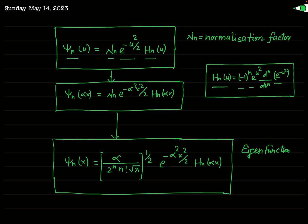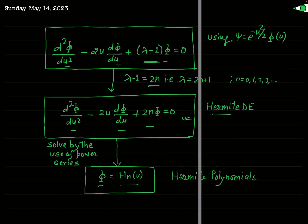Applying the normalization condition, the normalization factor Nₙ comes out to be: (α / (2ⁿ · n! · √π))^(1/2). Therefore the normalized eigenfunction ψₙ(αx), or simply ψₙ(x), equals this normalization factor times e^(−α²x²/2) times Hₙ(αx), since u = αx. These are the eigenfunctions of the one-dimensional linear harmonic oscillator.